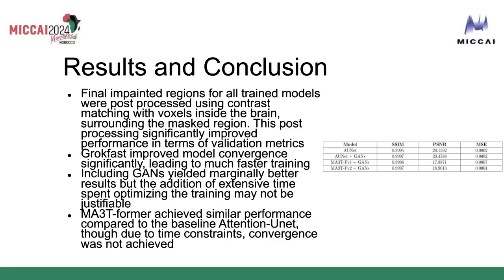GrokeFast did improve model convergence significantly, leading to much faster training. Including GANs also yielded marginally better results, but the time spent on optimizing the GANs hyperparameters might not be justifiable in a competition setting, especially if starting from scratch. Our proposed model achieved performance comparable to our baseline attention model, though due to time constraints we weren't able to completely finish the training and the models never converged.